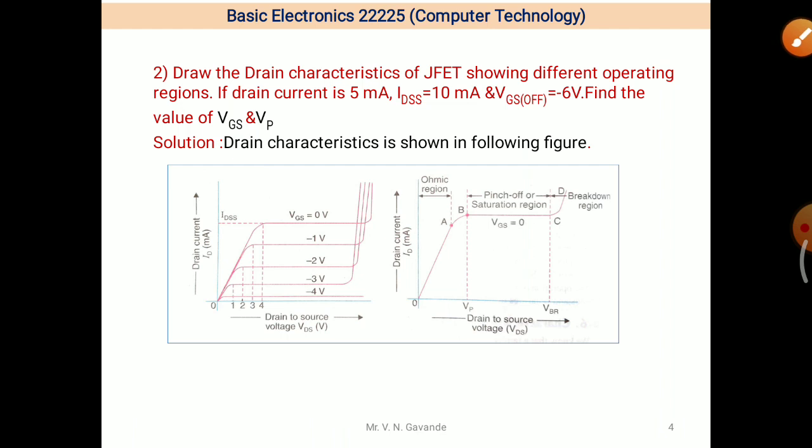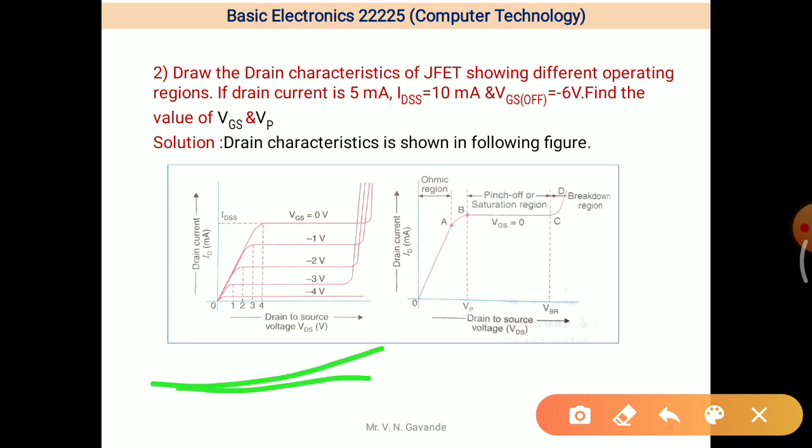Then second equation or we call it as a second example. Draw the drain characteristics of JFET showing different operating regions. If drain current is 5 mA, IDSS is equal to 10 mA and VGS OFF is equal to minus 6 volts, find the values of VGS and VP. Now first drain characteristics of JFET. Characteristics means a set of curves. In this case there are 5 curves.